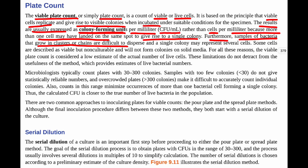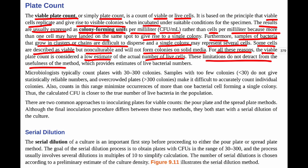Some cells are described as viable but non-culturable and will not form colonies on solid media, providing another reason why the viable plate count is considered a low estimate of the actual number of live cells. While it does count live cells, it is not perfectly accurate. However, these limitations don't detract greatly from its usefulness, as it is easy to perform and gives a good estimate of live bacterial numbers. For example, if another method shows a high count but nothing grows on the plate, we know those are dead cells — confirming the plate count is still valuable.